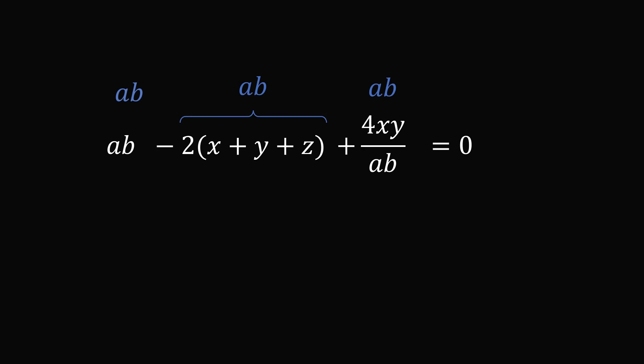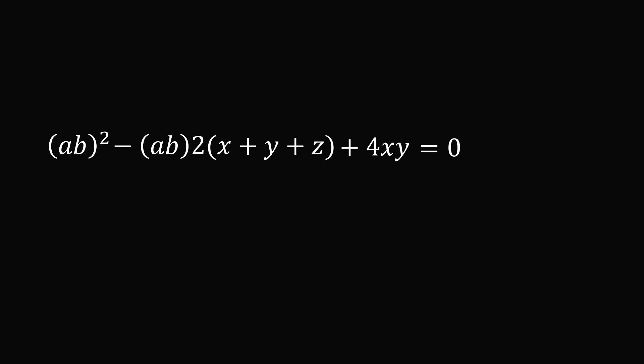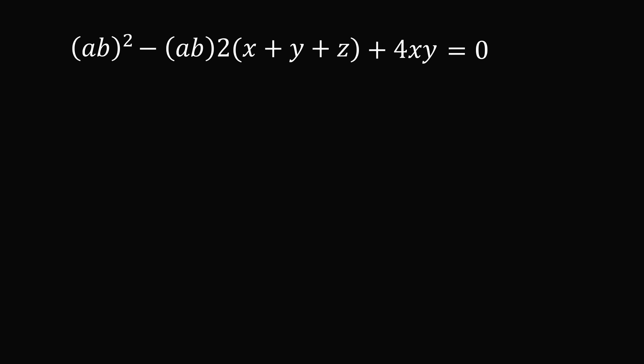So AB times AB will be equal to AB squared. Here, we have an AB that will just add on to this factor. And finally, the AB will get rid of the AB in the denominator. So we're just left with 4XY. So let's look at this equation. It looks like a complicated equation, but we can do a substitution. Think about AB as just one term. If AB squared is one term, so we have something squared minus AB times a constant factor, plus a constant is equal to 0. Why, this is nothing more than a quadratic equation in the variable AB.